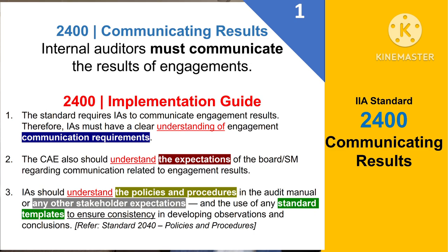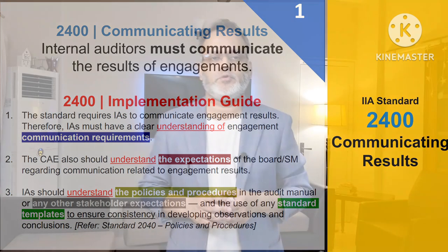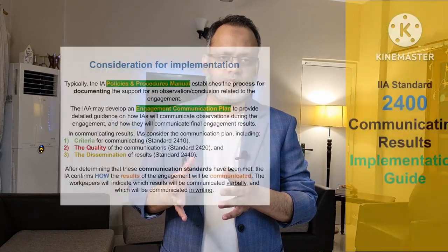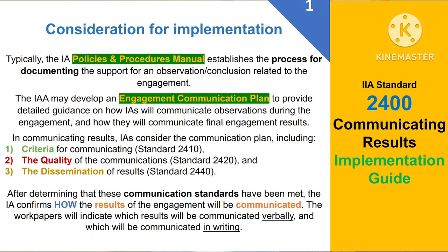Internal auditors should understand the policies and procedures in the internal audit manual or any other stakeholders' expectations and the use of any standard template to ensure consistency in developing observations and conclusions. You may refer to the standard on policies and procedures, standard 2040. Typically, the internal audit policies and procedures manual establishes the process for documenting the support for an observation, conclusion, or result related to the engagement. The internal audit activity may develop an engagement communication plan to provide detailed guidance on how internal auditors will communicate observations during the engagement and how they will communicate final engagement results.